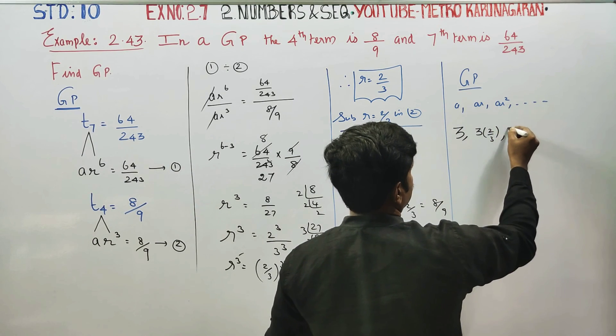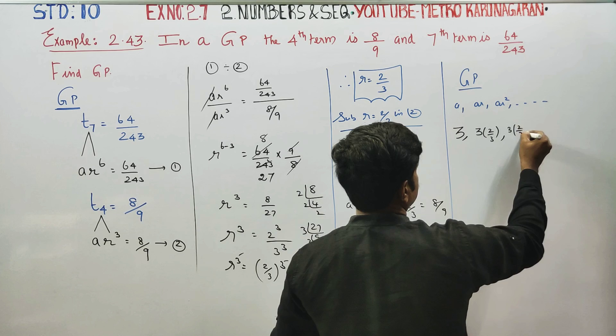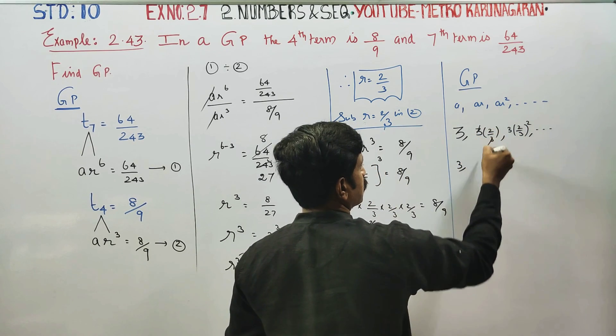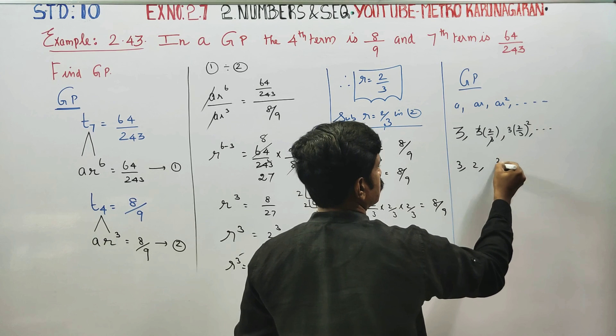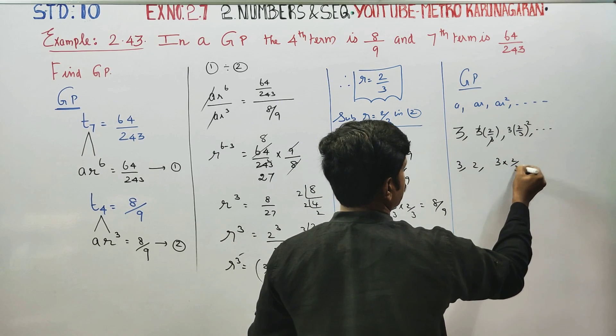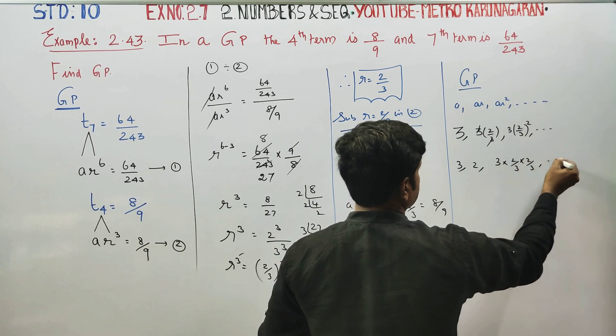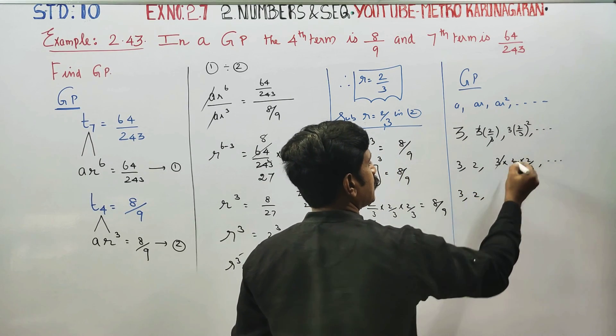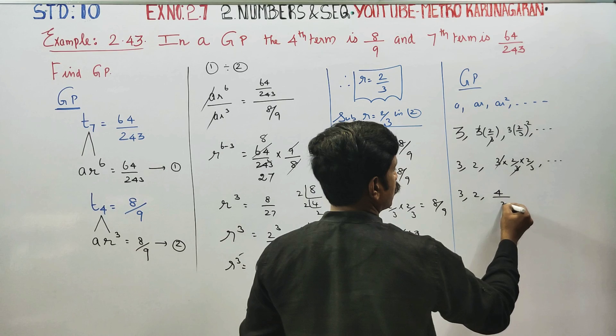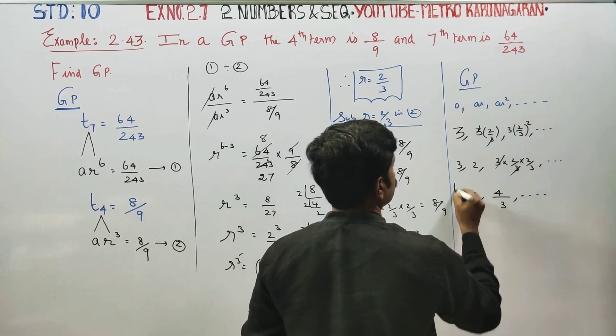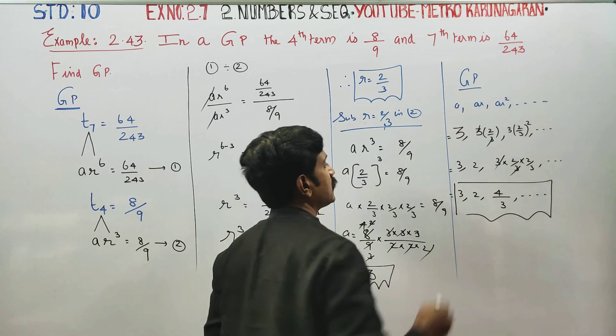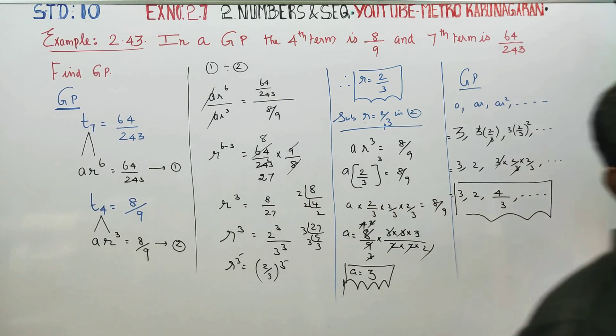AR square, A into 2 by 3 whole square. 3 cancel it out, 2 comma, 3 into 2 by 3, 3 cancel it out, 3 comma 2, 2's are 4, 4 by 3 comma dot dot dot. This is your answer GP. Thank you.